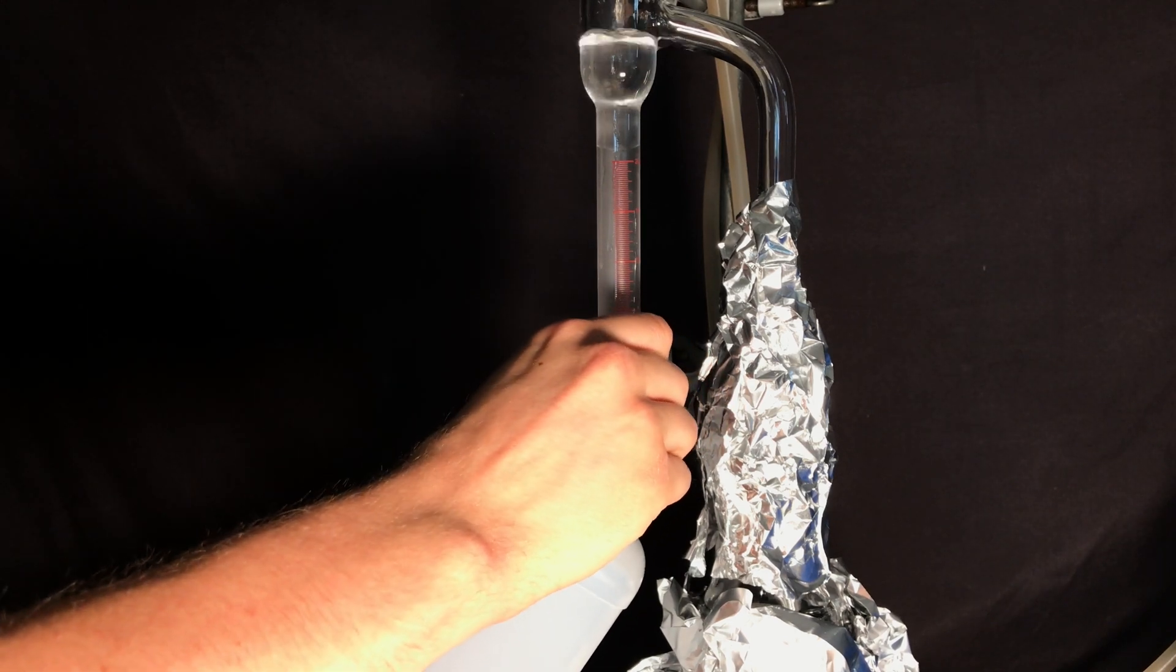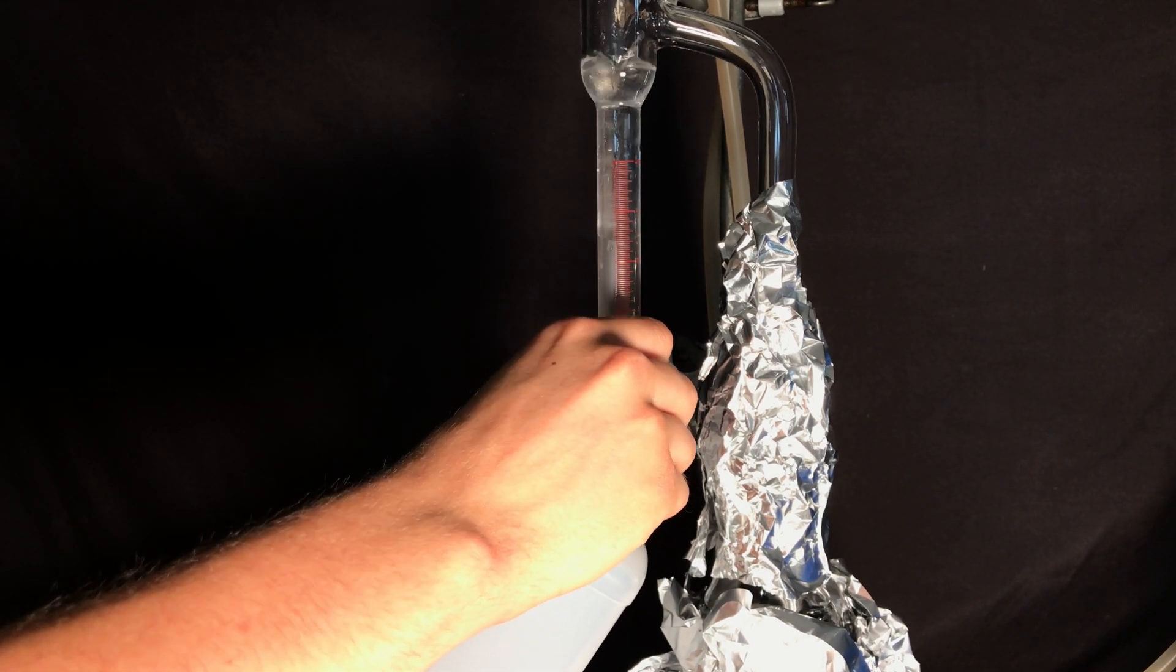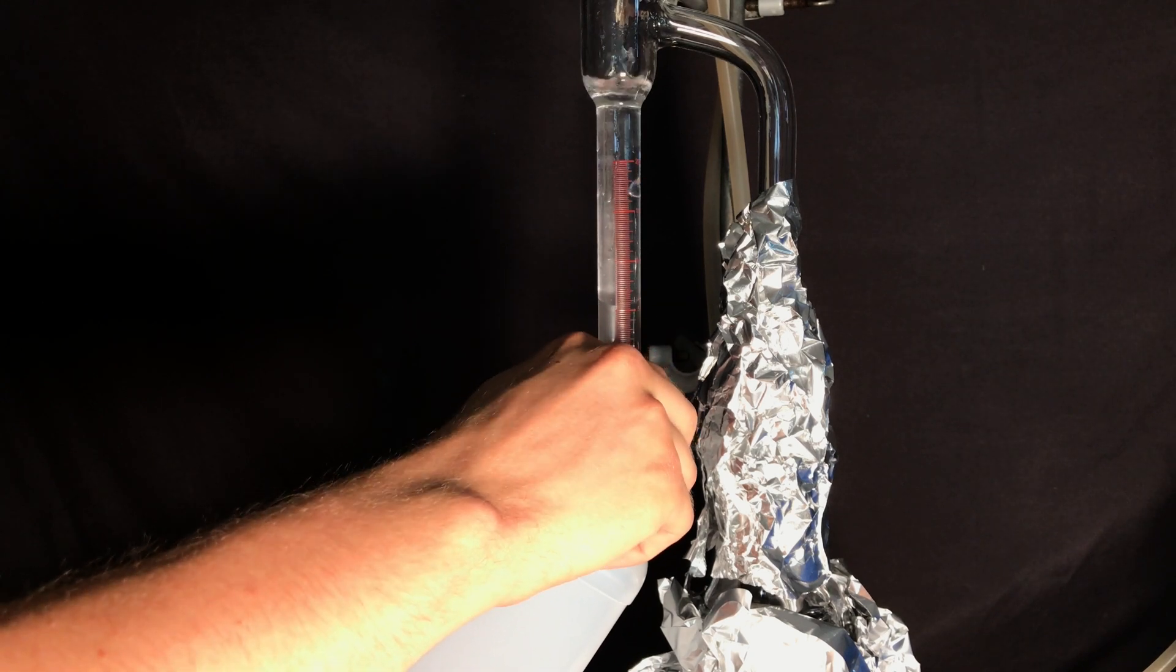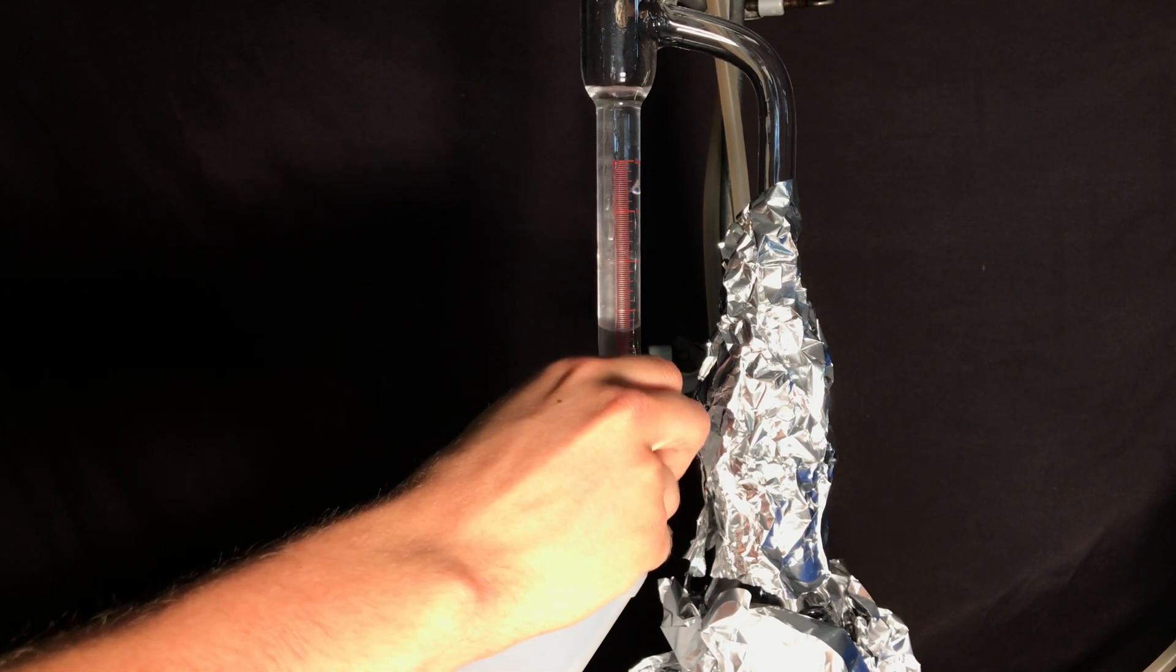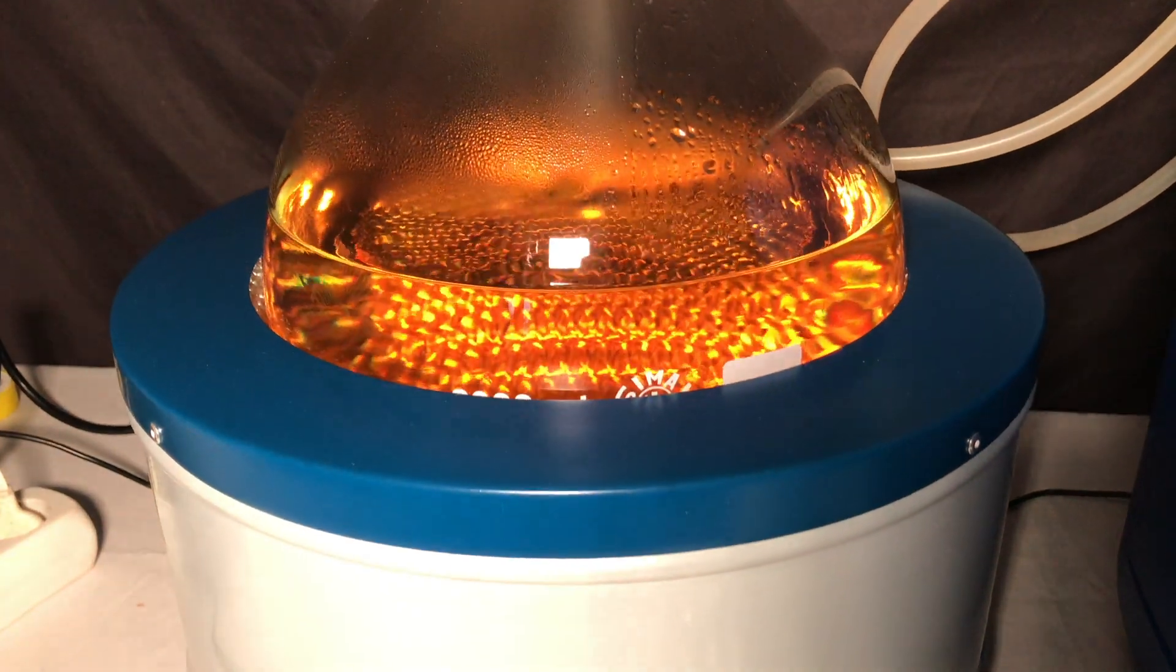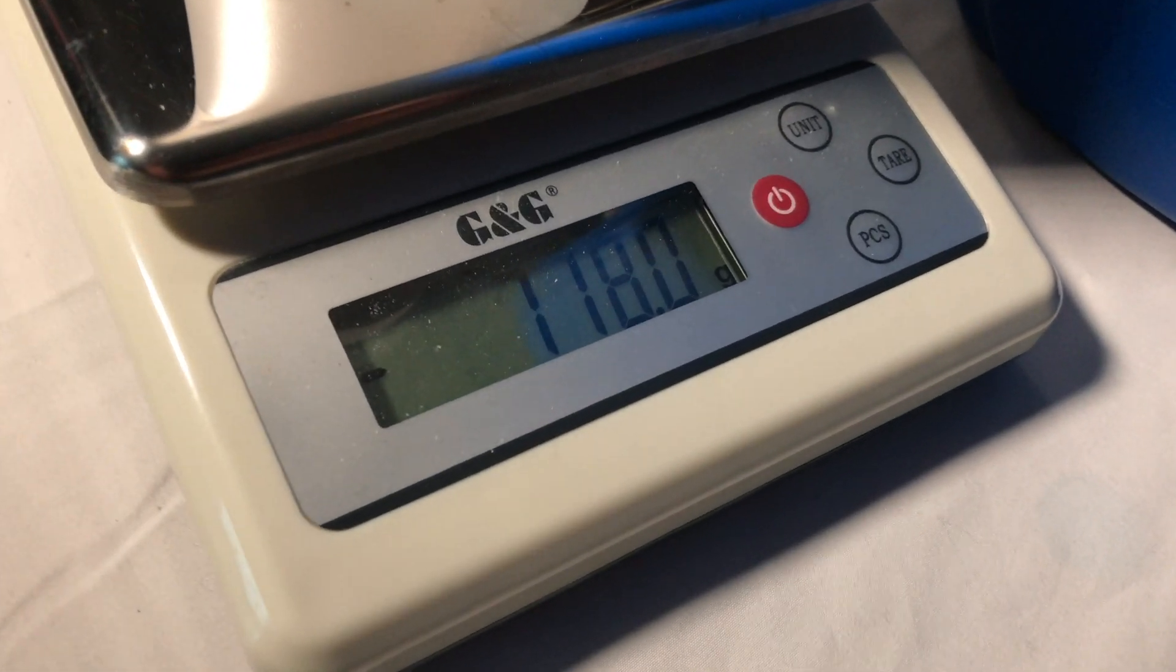Under ideal conditions we would collect 414.35g of water and my Dean-Stark trap is not going to fit that much. Therefore we occasionally had to drain it. I used this pre-weighed storage bottle in order to determine how much water we already collected.